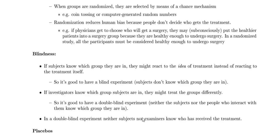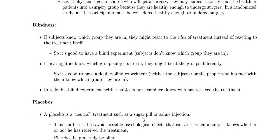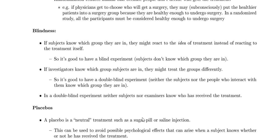The next factor is blindness. If subjects know which group they're in, they might react to the idea of the treatment instead of the treatment itself. So it's good to have a blind experiment where subjects don't know which group they're in. Also, if investigators know which group the subjects are in, they might treat the groups differently. So it's good to have a double-blind experiment where neither the subjects nor the people who interact with them know which group they're in.